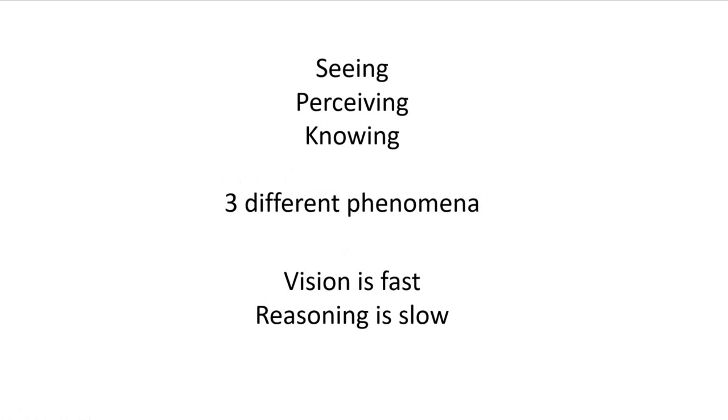We only perceive a small fraction of those. And then a third stage is transforming what we're perceiving into some kind of knowledge. But there are three very different phenomena. They happen in different parts of the brains. They're actually called system one, system two, which I'll talk about in a second.